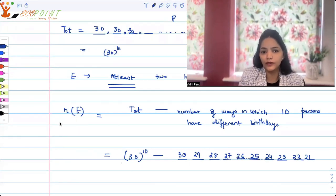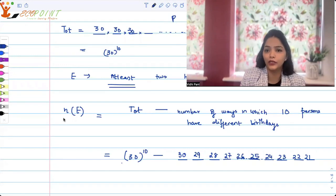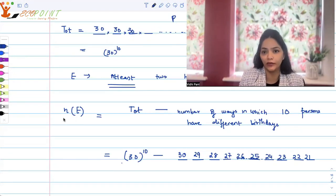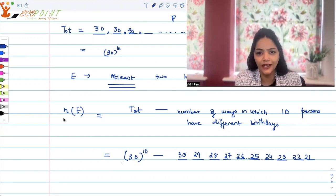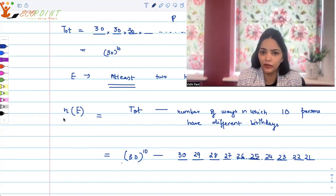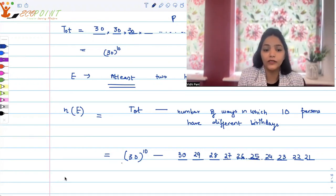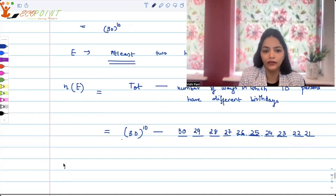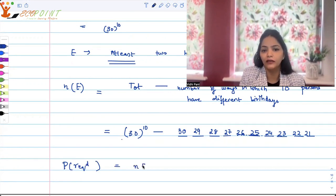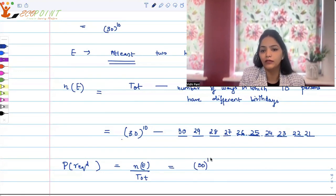And this is the number of ways in which at least two people will be sharing a birthday. Because what have we done? We have taken the total cases and we've subtracted the cases in which all of them have different birthdays. So that means all the other cases will be the cases where at least two of them will be sharing a birthday. So the probability of the required thing, the required probability will be the favorable cases upon the total cases.